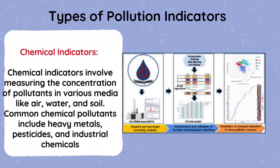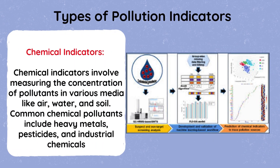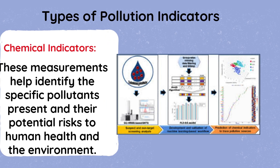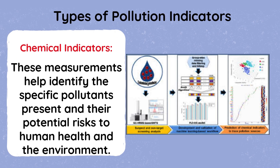Chemical indicators involve measuring the concentration of pollutants in various media like air, water, and soil. Common chemical pollutants include heavy metals, pesticides, and industrial chemicals. These measurements help identify the specific pollutants present and their potential risks to human health and the environment.